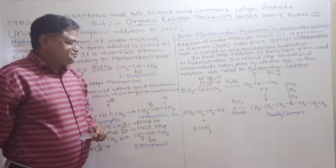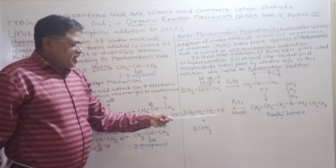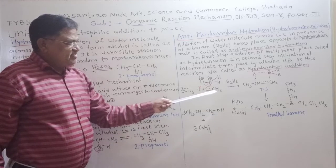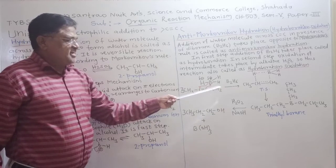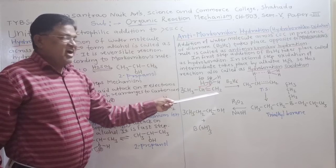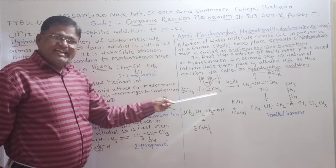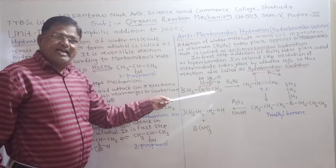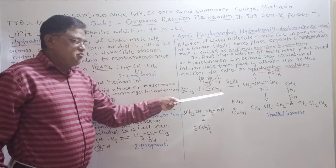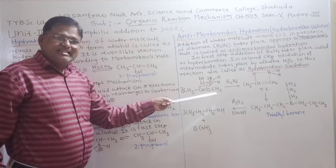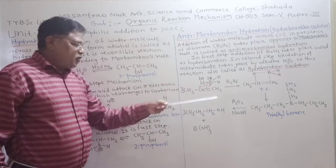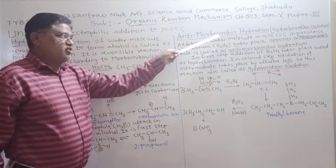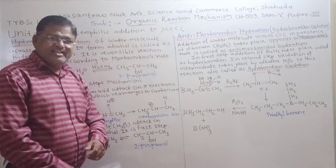In this reaction, the addition of negatively charged OH group takes place on that double bonded carbon atom which contains more number of hydrogen atoms. That means the reaction takes place opposite to Markovnikov's rule and therefore it is called as anti-Markovnikov hydration reaction.